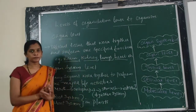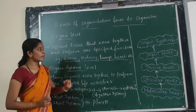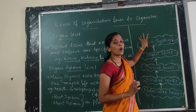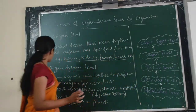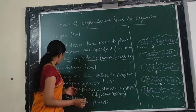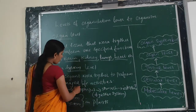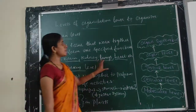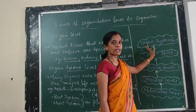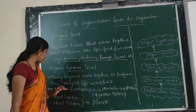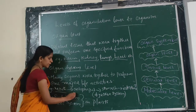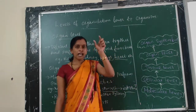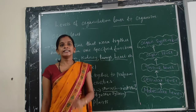Next is the organ system level. Many organs work together to perform one or many life activities, and these organs combine together to form an organ system. For example, in animals, mouth, esophagus, stomach, small intestine, and large intestine are all organs involved in the digestive system.